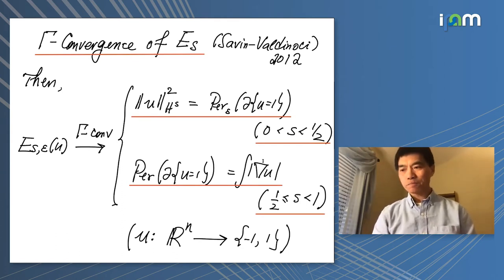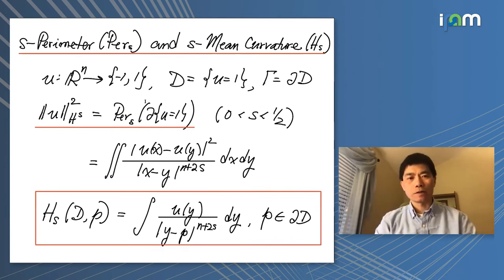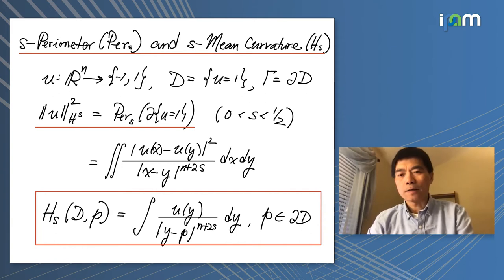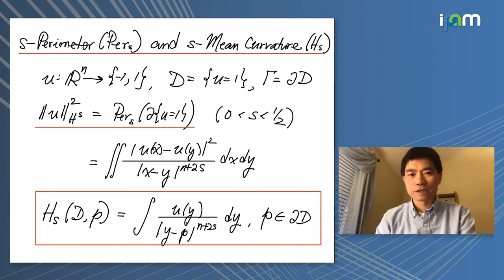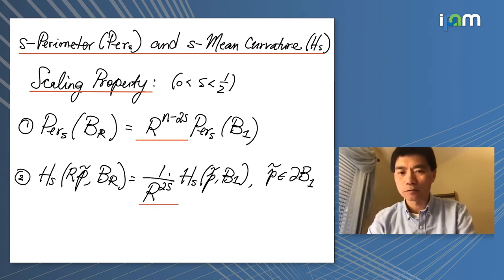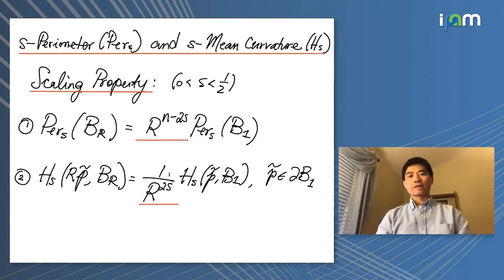As a reminder: the functional perimeter is exactly the H^s norm, and the s-mean curvature is the first variation of this. Just like the Laplacian for local equations, we get the fractional Laplacian for piecewise continuous functions. There are also scaling properties: the s-perimeter of the ball scales like R^{n-2s}, and the s-mean curvature scales like R^{-2s}. These will be useful in scaling arguments.